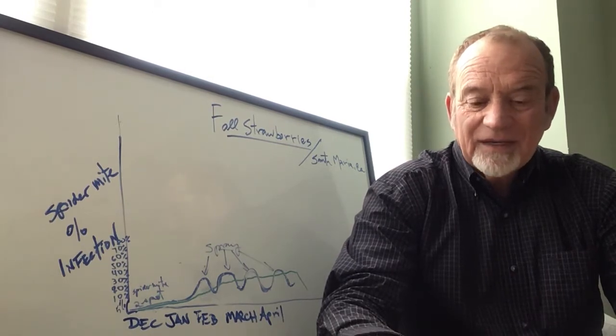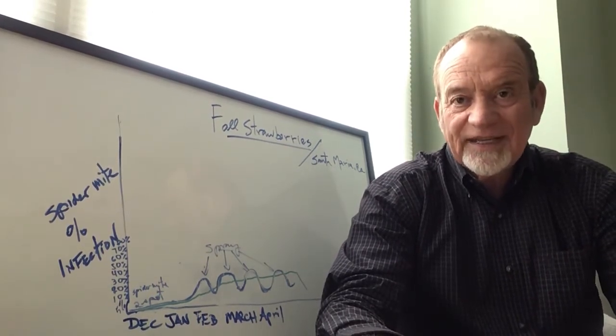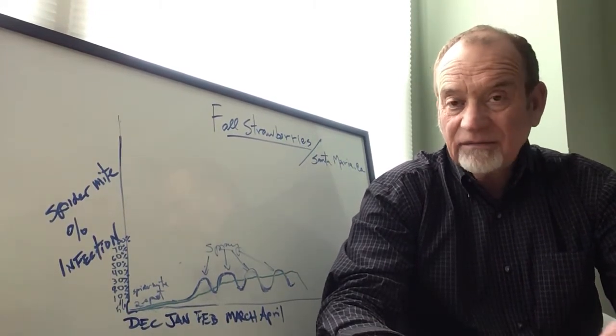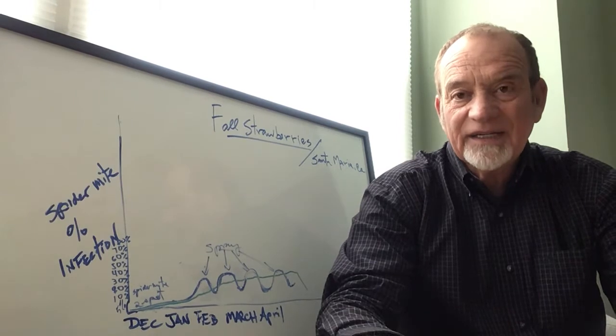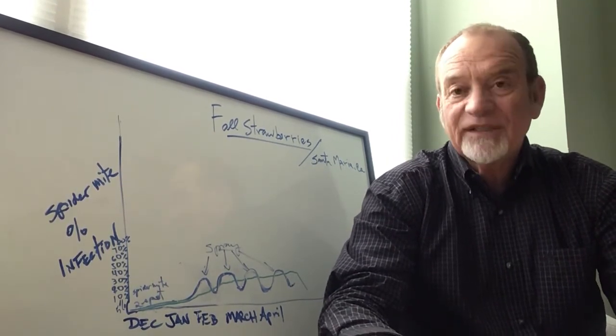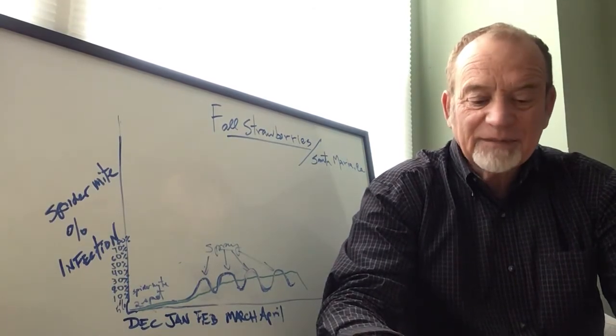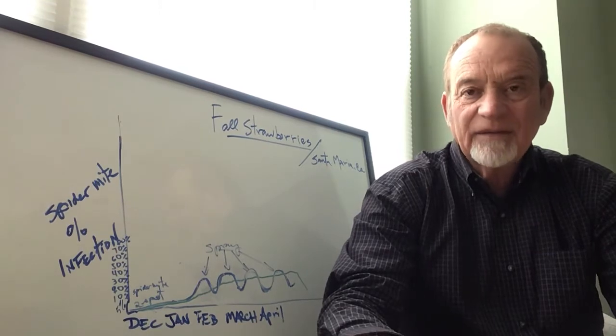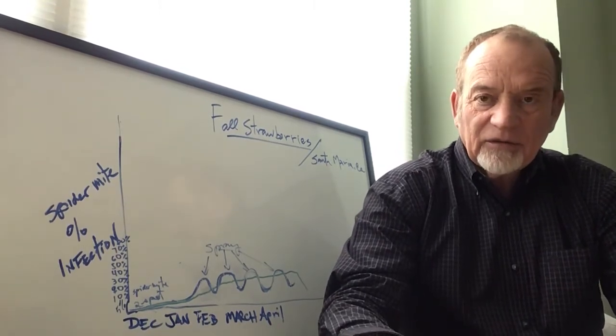With a cost of $500 per acre releasing predatory mites, it doesn't compare to the damages that the two-spot does. They can destroy the field completely—the losses can be 100% if we lose the field to more than 10%.